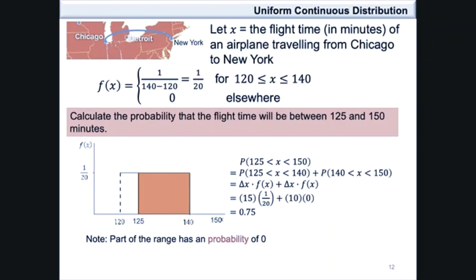This is the change in x multiplied by f of x for the first probability, plus the change in x multiplied by f of x for the second probability. This is equivalent to 15 times 1 over 20 for the first probability, plus 10 times 0 for the second probability, and the sum of the two products is equal to 0.75.